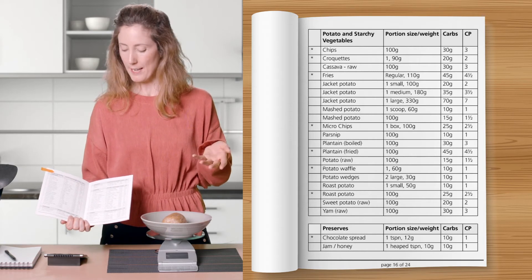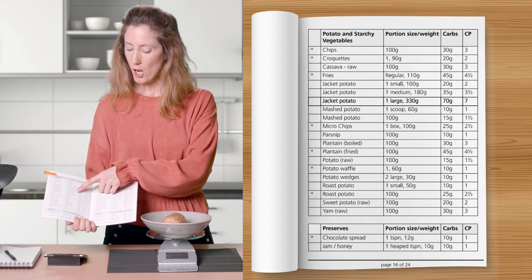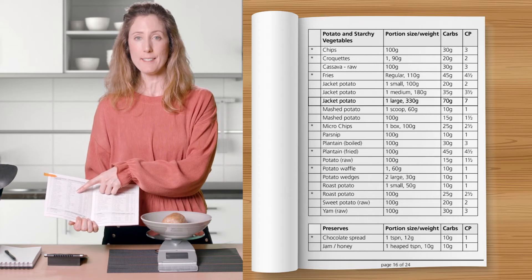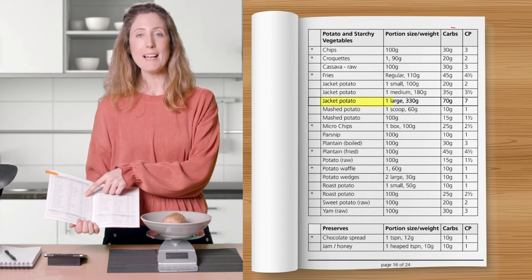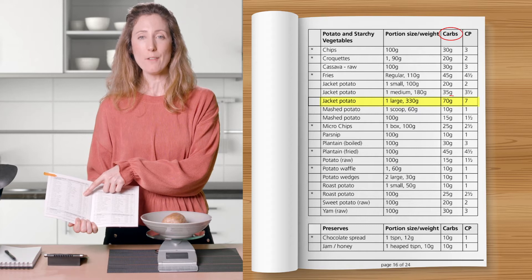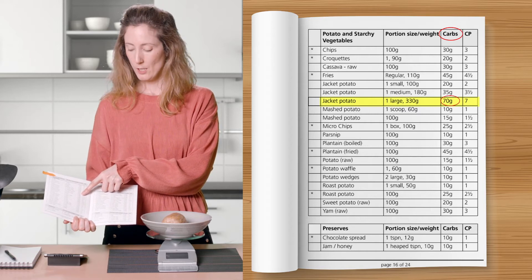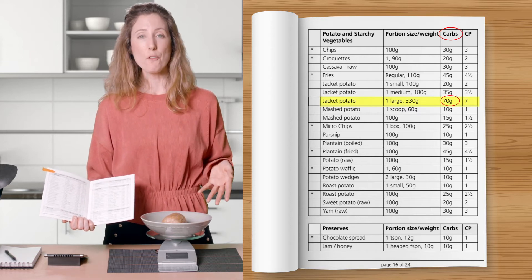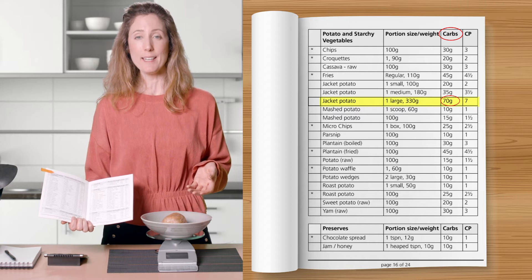So I think that my potato is a large jacket potato, so I estimate that the carbohydrate is 70 grams. But I don't know if my potato is a large potato.